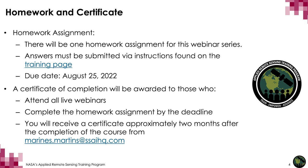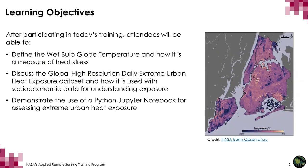A certificate of completion will be awarded to those who attend all live webinars and complete the homework assignment by the deadline of August 25th. You will receive a certificate approximately two months after the completion of the course from Marinas Martin. After participating in today's training, attendees will be able to define the wet bulb globe temperature and how it is a measure of heat stress.